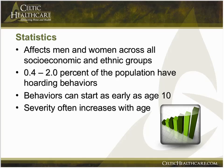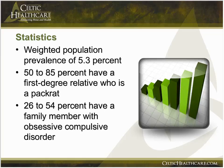Compulsive hoarding affects men and women across all socioeconomic and ethnic groups. 0.4 to 2% of the population have hoarding behaviors — not necessarily compulsive hoarding, but some behaviors — and this can start as early as age 10, with severity often increasing with age. The weighted population prevalence is 5.3%, and 50 to 85% have a first-degree relative who is a pack rat. 26 to 54% have a family member with obsessive-compulsive disorder.